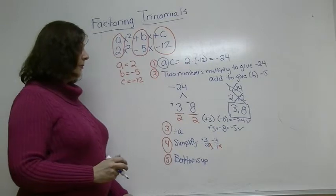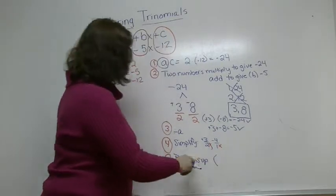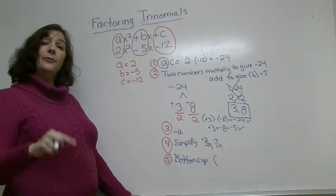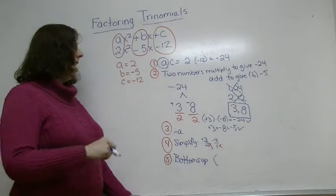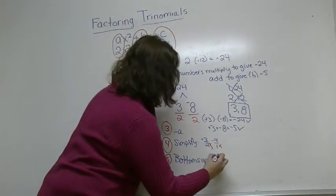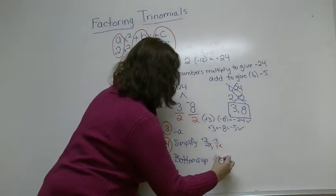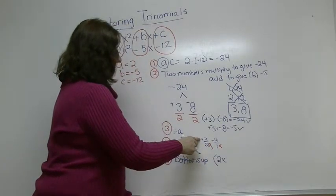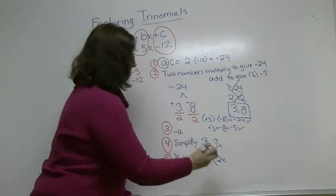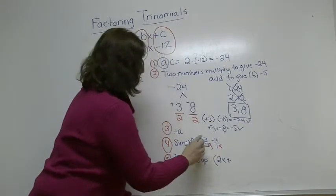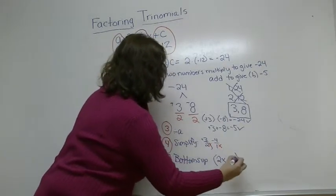And then our factored form is bottom up, which means we write the bottom first with the x, and then we include the top, the numerator after that. So this is 2x, then we use the sign of whatever sign the number is. So this is going to be a plus 3.